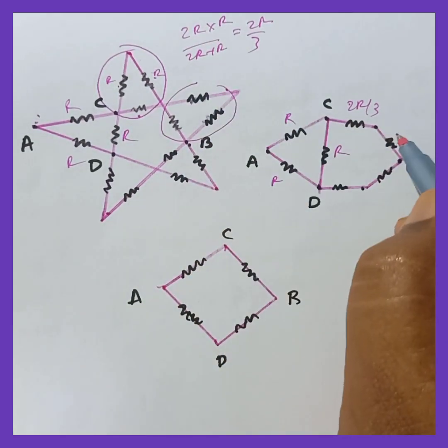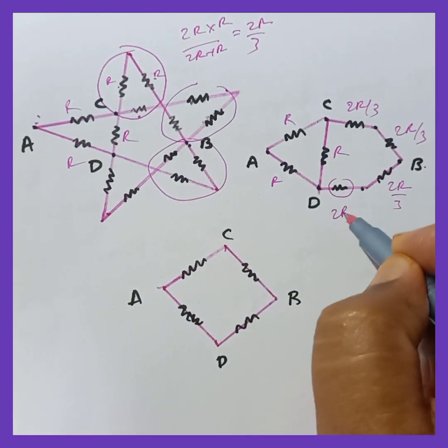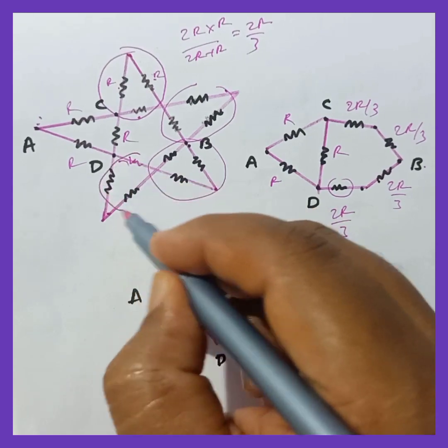Next similarly this is also going to be 2R by 3. And similarly this is also going to be 2R by 3. And even this is also going to be 2R by 3. Because this is replacing these three here.